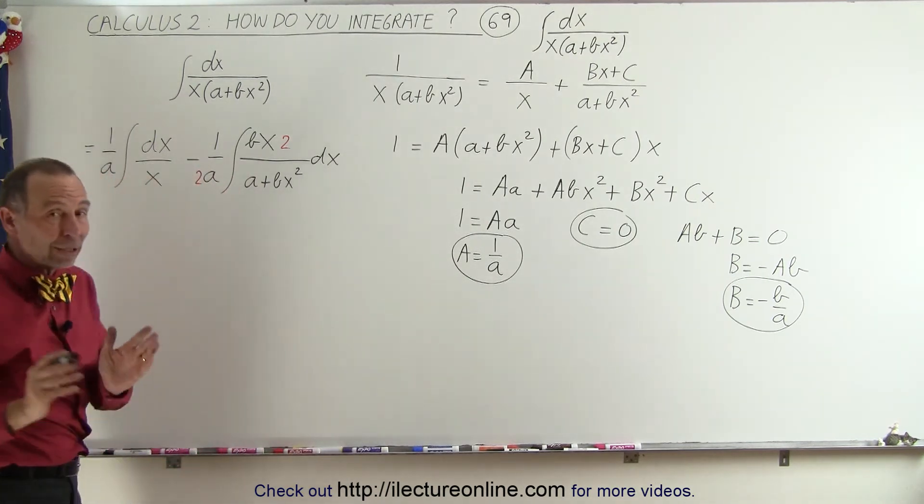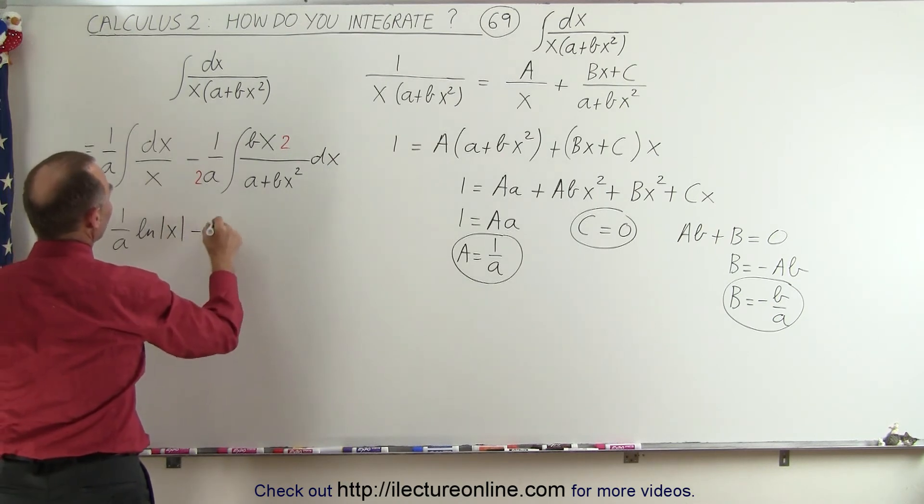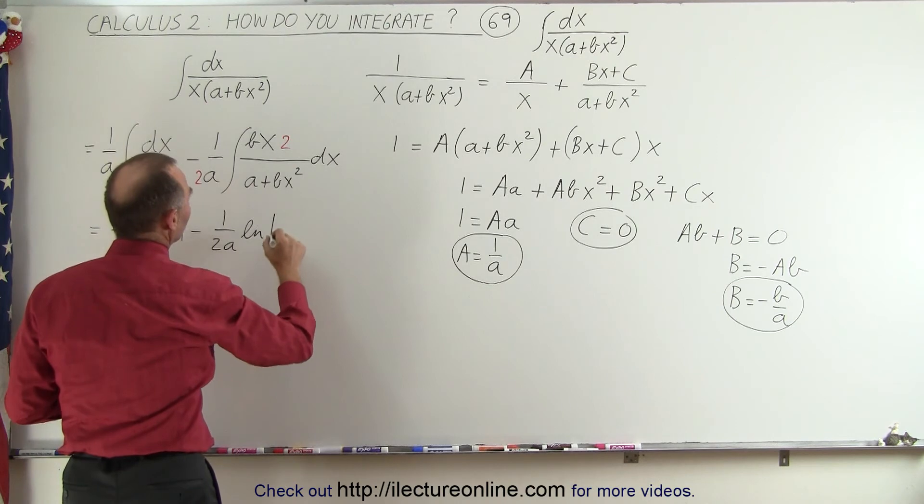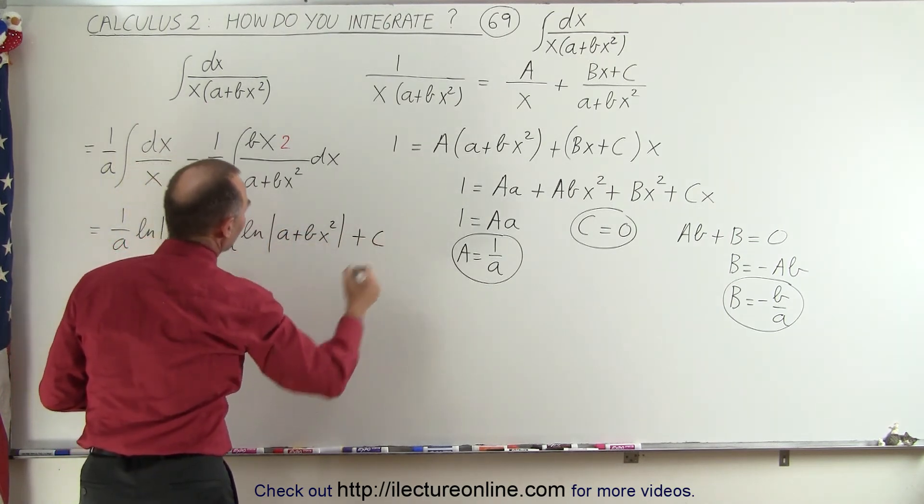So now we can go ahead and integrate those two integrals to see what we get. So this becomes equal to 1 over a times the natural log of x minus 1 over 2a times the natural log of a plus bx squared plus a constant of integration.